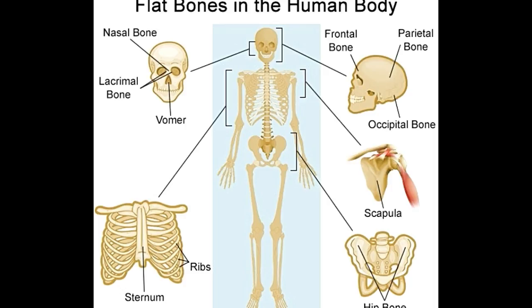The last two pairs of ribs are called floating ribs. These are only attached to the spine and are not connected to the sternum. Scapula: The scapula, which is commonly known as the shoulder blade, is a triangular-shaped bone that forms the posterior section of the shoulder girdle. It joins the humerus, the upper arm bone, with the clavicle, the collar bone. It is a flat, paired bone with an extensive surface for muscular attachment.